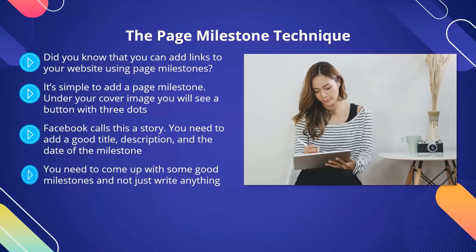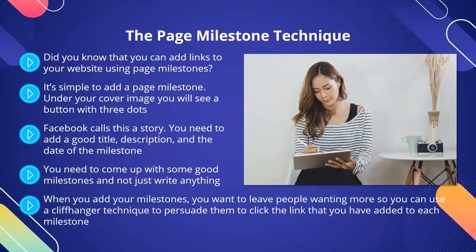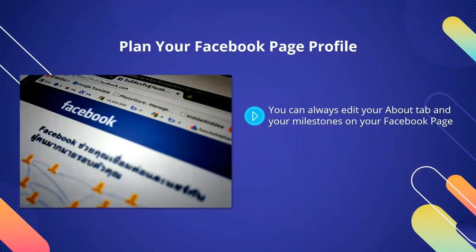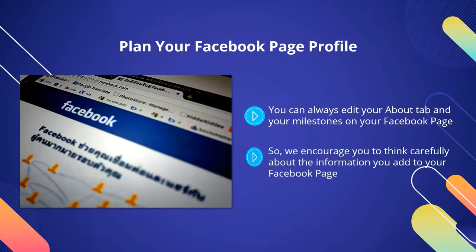When you add your milestones, you want to leave people wanting more, so you can use a cliffhanger technique to persuade them to click the link that you have added to each milestone. For example, you can tell them how you made your first dollars online and then tell your visitors that they can see more details by clicking the link. Plan your Facebook page profile. You can always edit your About tab and your milestones on your Facebook page. We recommend that you plan everything out and ensure that you have more information available on your website. Getting Facebook users to your website is what it is all about. If you don't complete the sections or just enter a few words as the bare minimum, then you are missing a golden opportunity for free traffic.